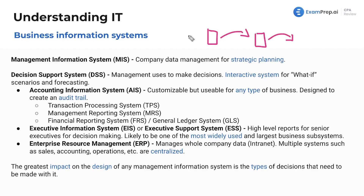You could have your system where you enter journal entries. We just need to know all of these terms, generally the ones in bold, and need to know little facts about them. For example, what is a management information system? It's a pretty broad one. This is the company data management for strategic planning, so it's just the system that management uses. Think of Salesforce, CRM — they've got all their systems and everything.